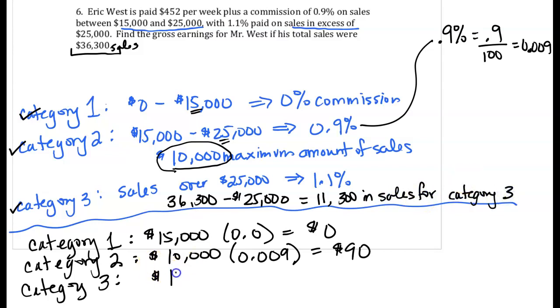So that $11,300 in sales in Category 3 gets paid at 1.1%, which is 0.011. And that's a total of $124.30.